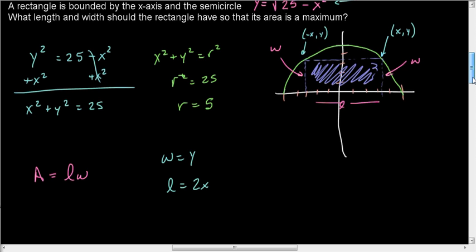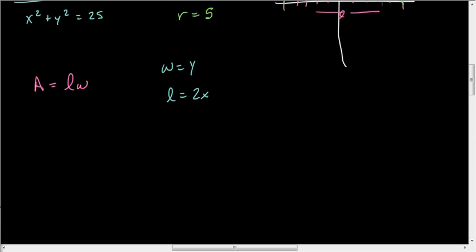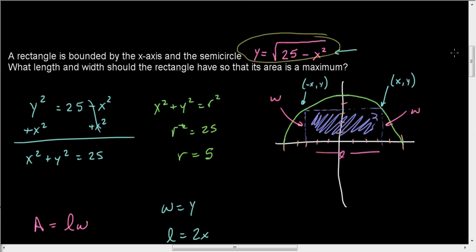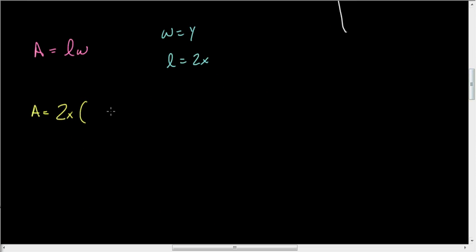So now we have our new area, which is A equals the length, 2x, times the width y. But y, recall, is this thing here. We have y equals the square root of 25 minus x squared. Now that we've got that, we can take its derivative.